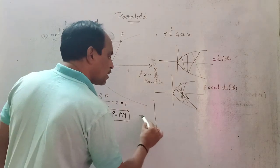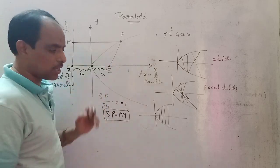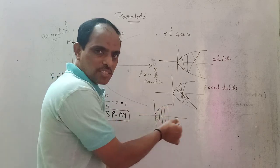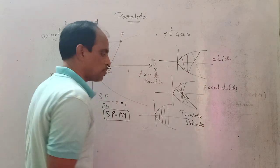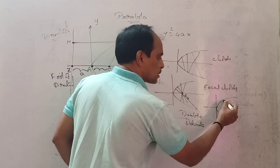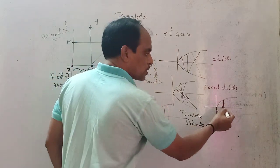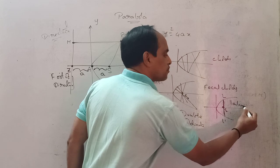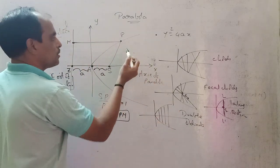The chords which are perpendicular to the axis of the parabola are called double ordinates. A double ordinate which passes through the focus is called the latus rectum.